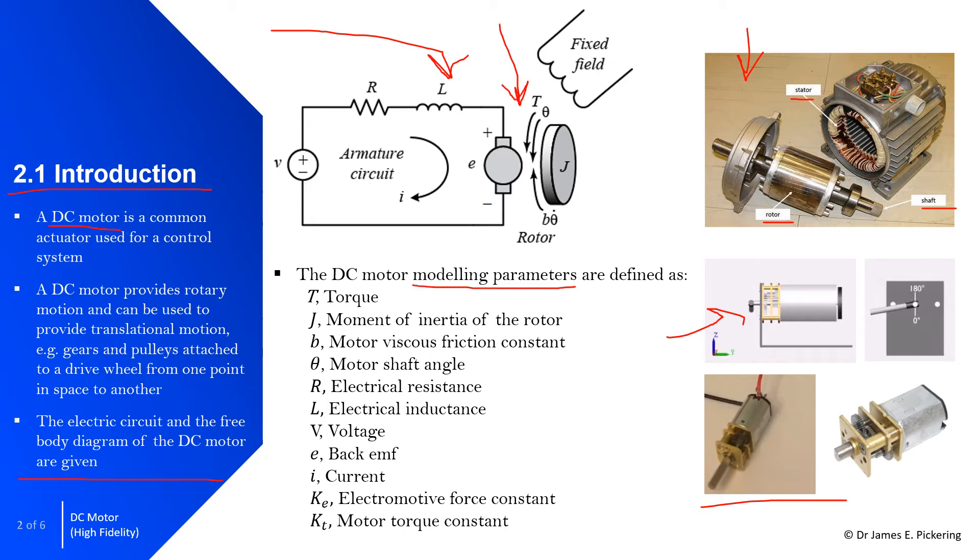You can see the modelling parameters defined as follows down here. So I'll quickly run through these, although you can read them quicker than I can say them. So T is torque, J is the moment of inertia of the rotor, B is the motor viscous friction constant, theta is the motor shaft angle. So theta dot is effectively the angular velocity and then if it was theta double dot, it'd be angular acceleration. R is the electrical resistance, L is the electrical inductance, V is the voltage, E is the back EMF, I the current. And then we've got these two constants here, K subscript E which is electromotive force, and K subscript T which is the motor torque constant. So these are all going to be used in this free body diagram here and the electric circuit to effectively derive the ordinary differential equation you'll see on the next slide.